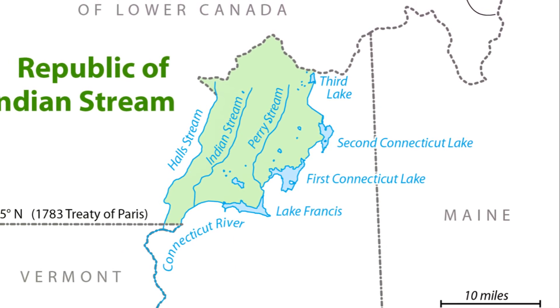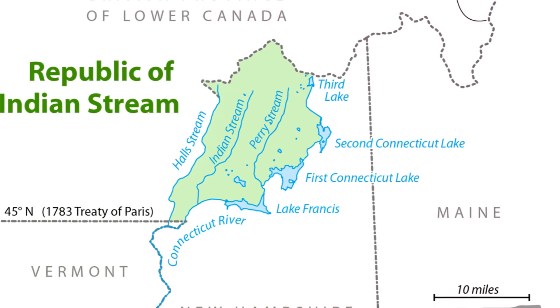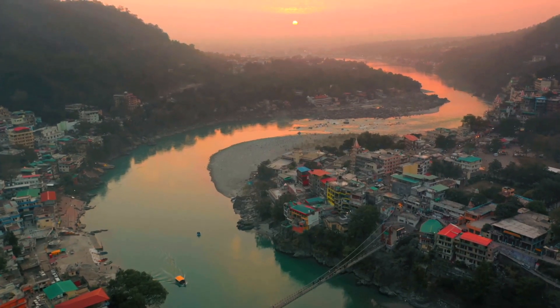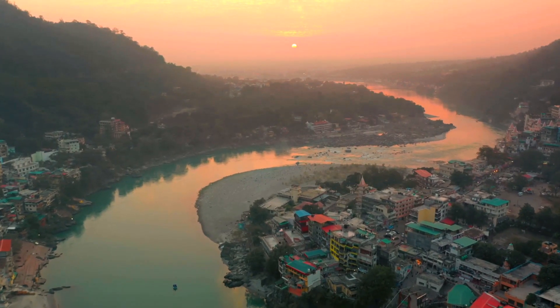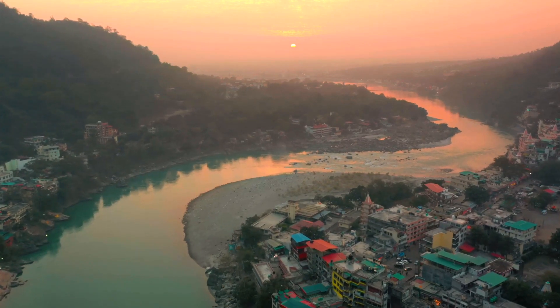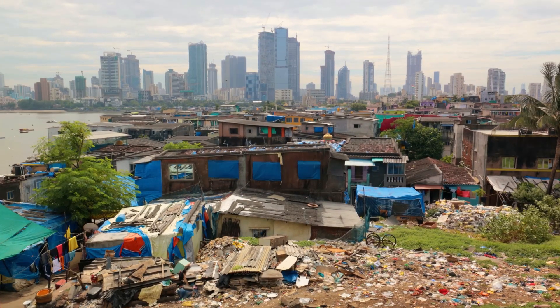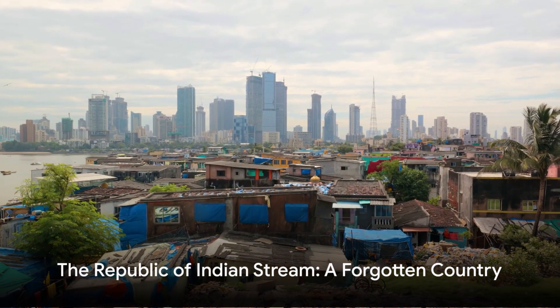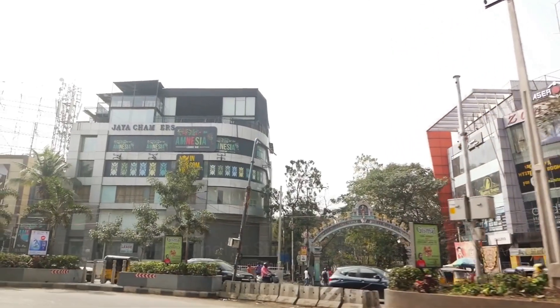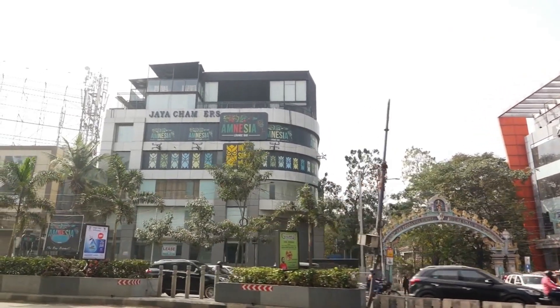The Republic of Indian Stream was a unique experiment in self-governance, a testament to the spirit of independence and the will to forge a new path in uncharted territory. It was a country born out of necessity that survived through the sheer determination and tenacity of its people. However, as is often the case with such extraordinary experiments, it faced numerous challenges — unrecognized by the world and constantly under threat from its larger neighbors, always fighting for its right to exist.